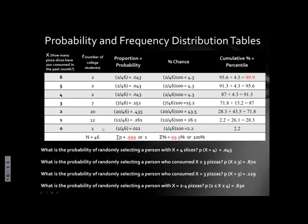Here's an example from Chapter 2 using a full frequency distribution table. The question is: how many pizza slices have you consumed in the past month? We asked every single person in a specific class — say, everybody in Psych 210 — treating them as our population. Two people had six slices, two had five, two had four, seven had three, and so on down.